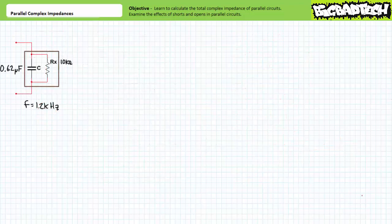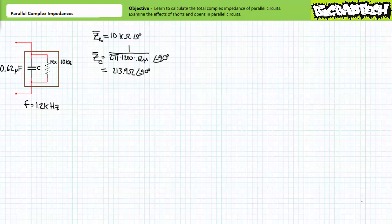One more illustrated example problem before I cut you loose on some exercises. As a practical example of parallel impedance calculations, compare and contrast an ideal capacitor with a real one. An ideal capacitor is entirely capacitive in nature and has no leakage resistance. A real capacitor in contrast is only primarily capacitive in nature and has a large leakage resistance that oftentimes needs to be accounted for. Consider a 0.62 microfarad capacitor with a large leakage resistance Rx of 10 kilo ohms. We're being asked to solve for the total impedance of this non-ideal capacitor at a frequency of 1.2 kilohertz or 1200 hertz. One can visualize the non-ideal capacitor as the capacitive portion and the leakage resistive portion in parallel with one another. The leakage resistive portion is a complex impedance of 10 kilo ohms at an angle of zero degrees.